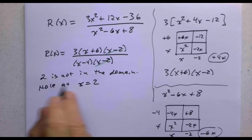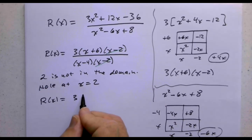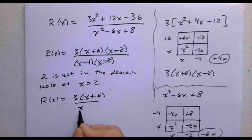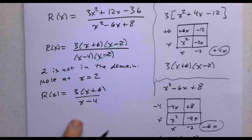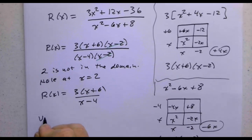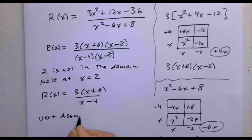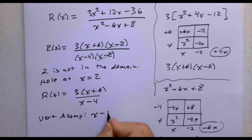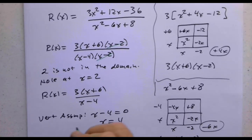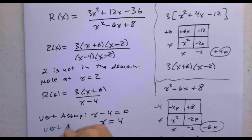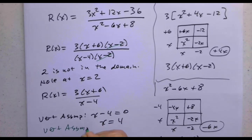So the function is, I can look at a different version of this with that removed. The hole is still going to be there. In terms of the vertical asymptotes, when is the bottom zero? The bottom is zero now when x minus 4 is zero. So to find the vertical asymptotes, when is x minus 4 equal to zero? That would occur when x equals 4. So I have a vertical asymptote at x equals 4 and a hole at x equals 2.